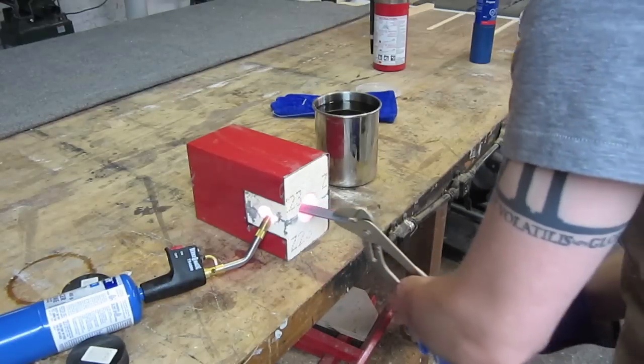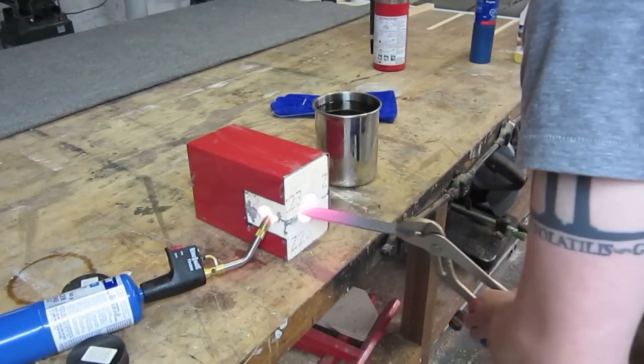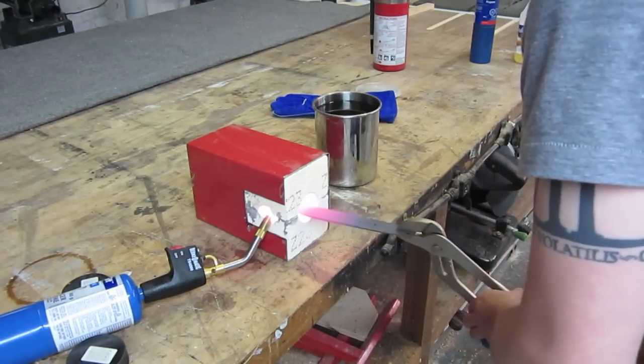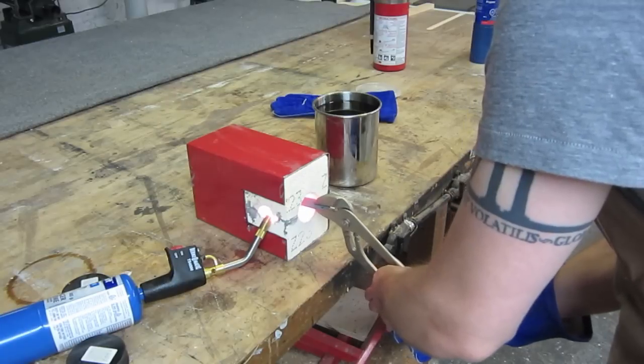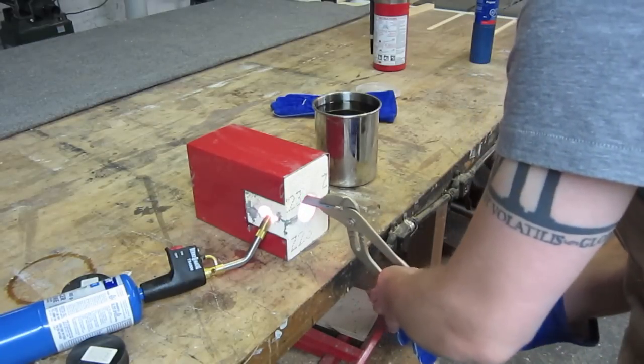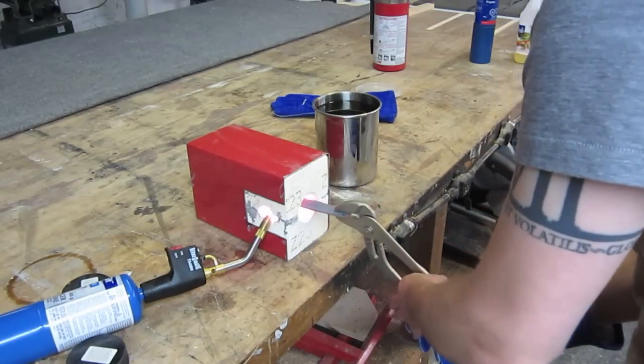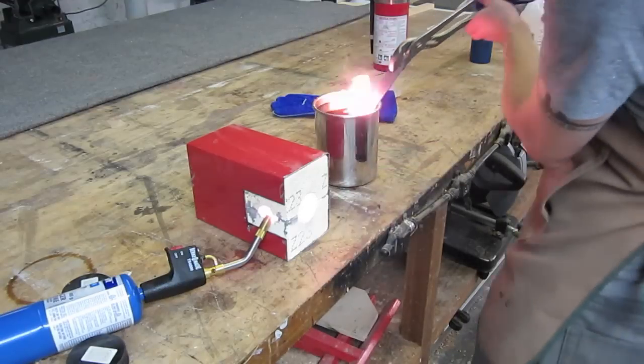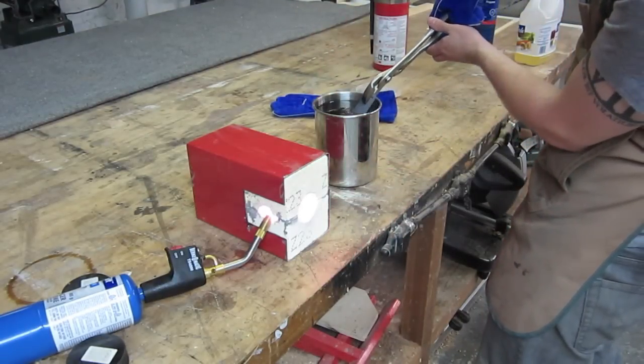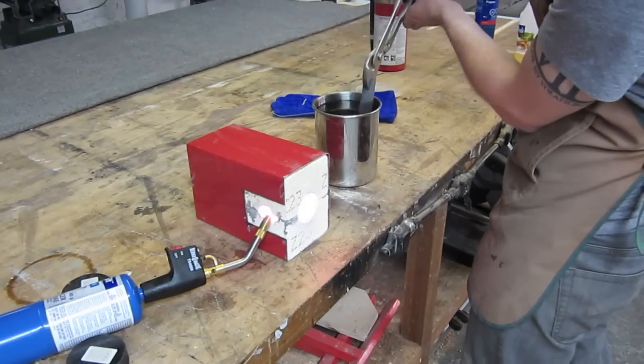After the blade is an even, dull cherry red color, remove it quickly from the forge and plunge it straight down into the quench oil. You only have a few seconds to get it out of the forge and into the oil before the blade cools too much. Be careful of where your hands are as the oil will often catch fire on the surface for a few seconds. After the blade is in the oil, make gentle slicing motions with it to help cool the blade. Do not move the blade sideways as this may cause warping.